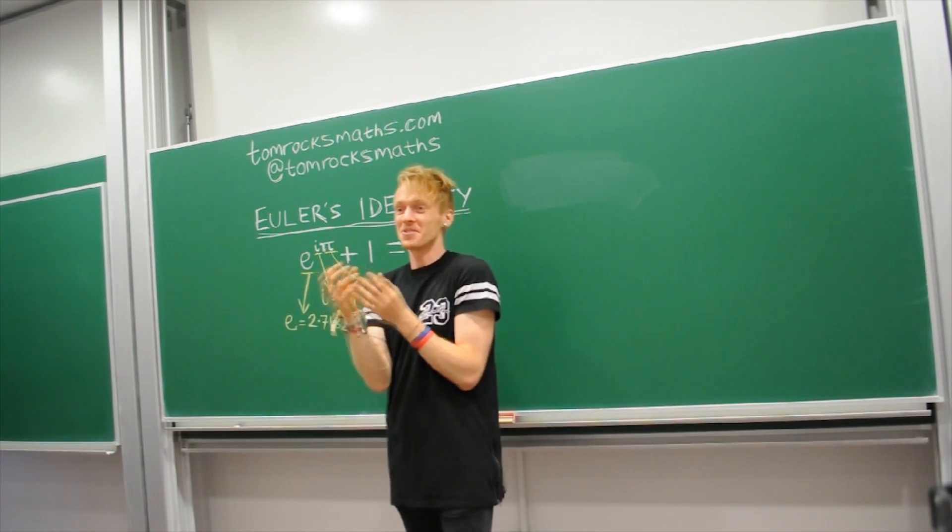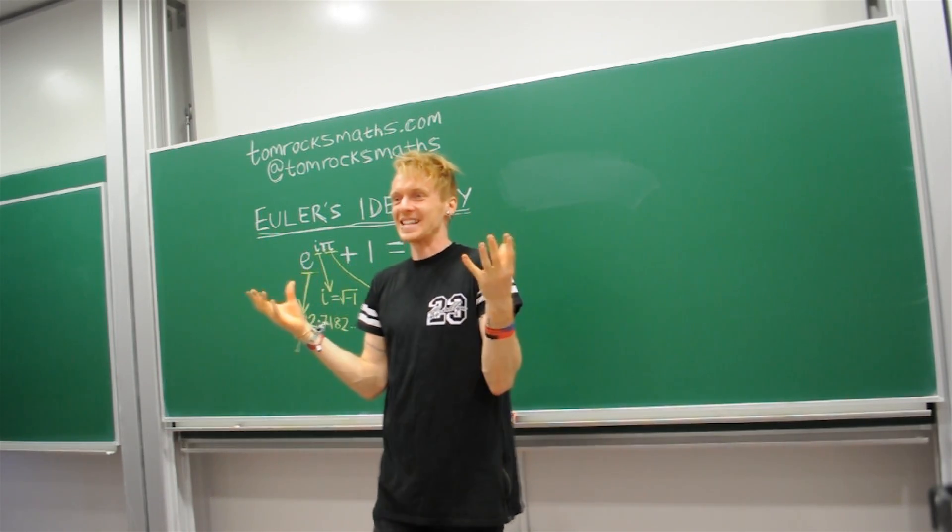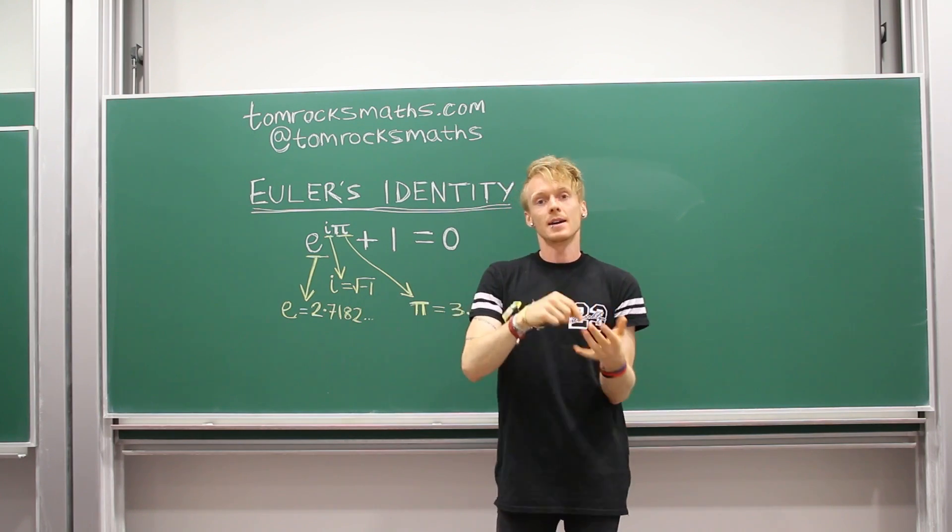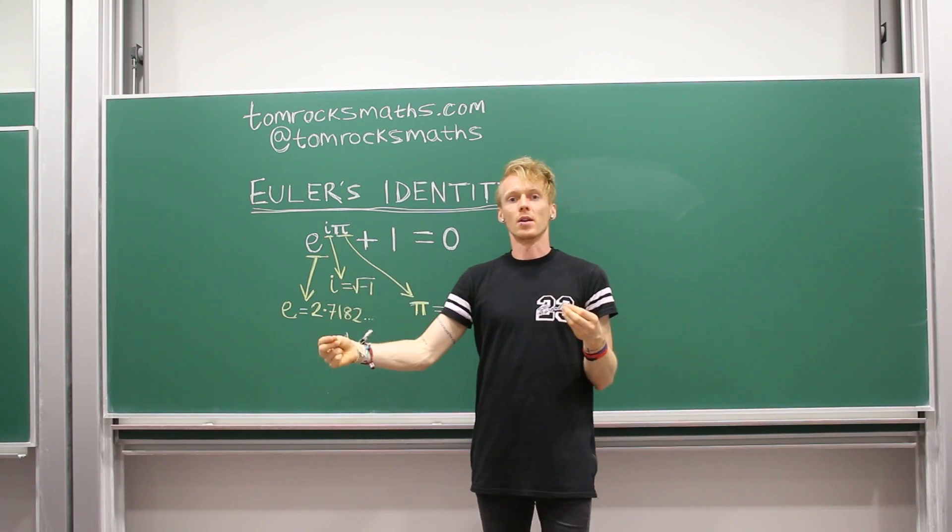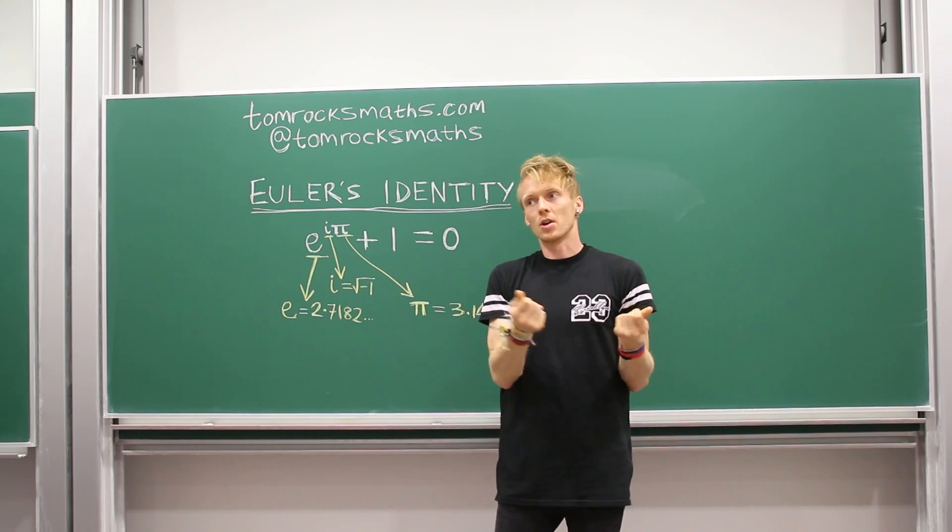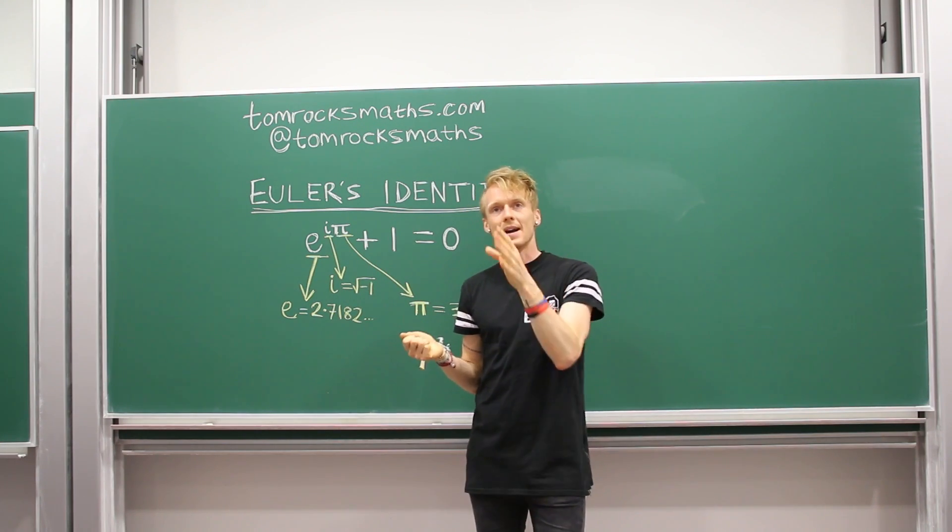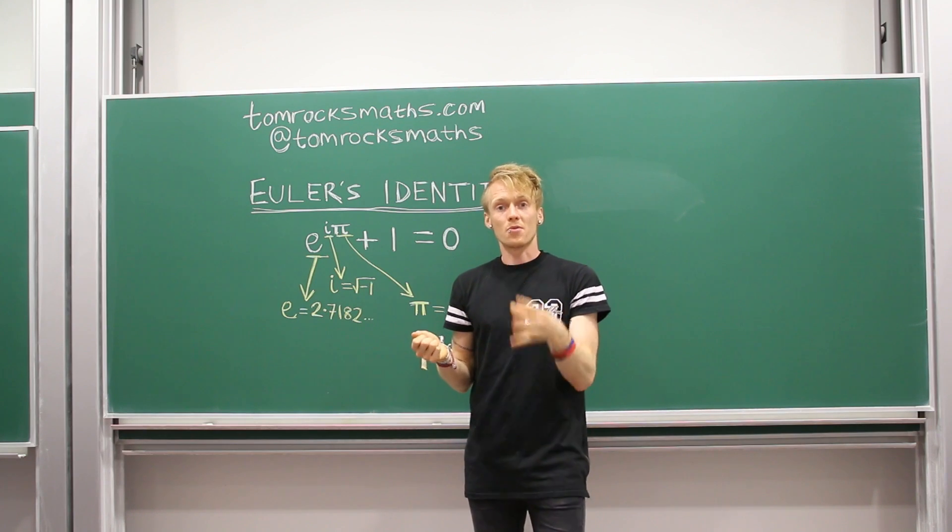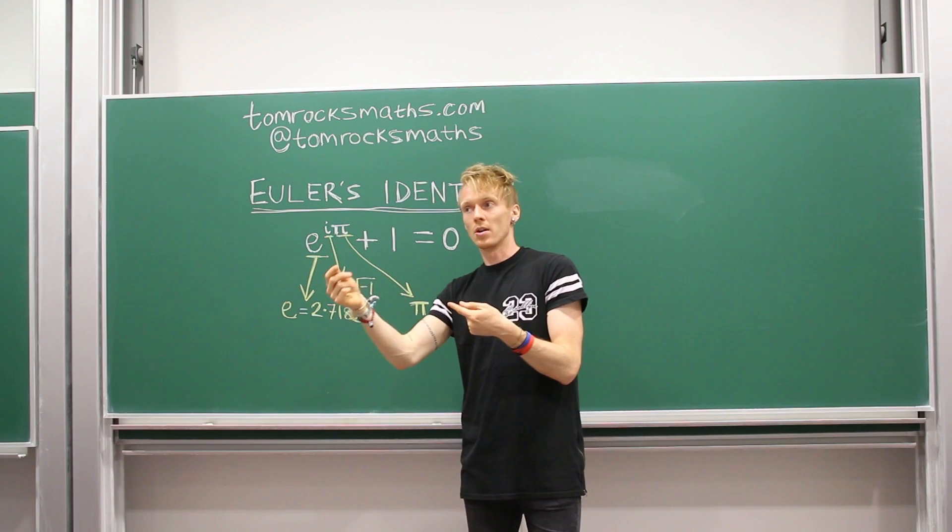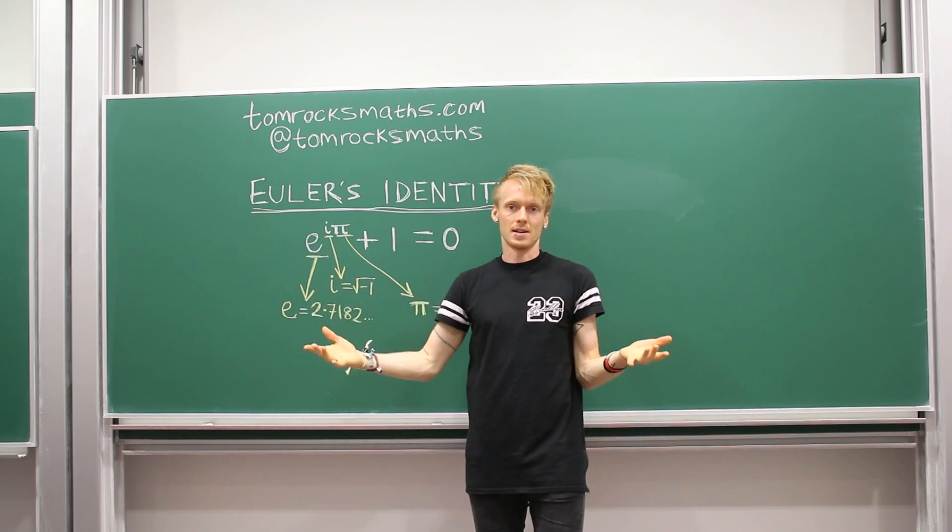So what we did as mathematicians was to invent an imaginary number which we call i. Maths is great, if you've got a problem you can just invent a number to fix it. i is the square root of minus one, which means that i times i gives you minus one. So now you can get the square root of any negative number. So for example, the square root of minus nine is going to be three i, because three times three is nine, i times i is minus one, nine times minus one is minus nine.